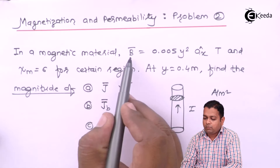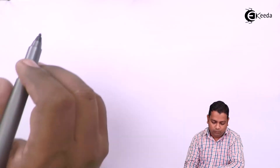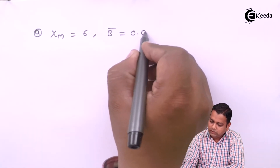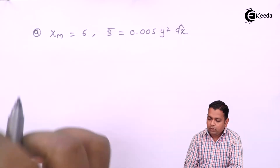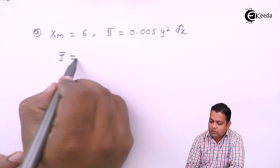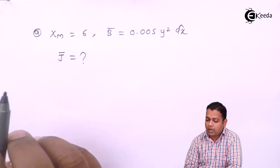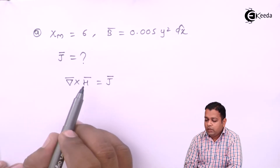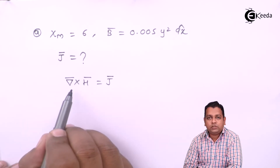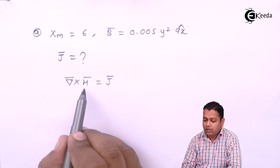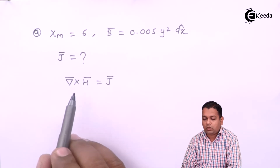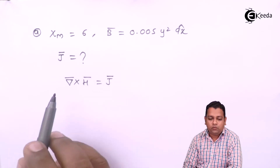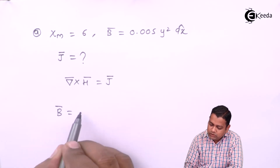Given data: magnetic flux density vector B̄ = 0.005y² Ax̂, and magnetic susceptibility χm = 6. For part A, we need the magnitude of J̄. From the point form of Ampere's circuital law, we know ∇ × H̄ = J̄. So if H̄ is known, J̄ can be determined. We can calculate H̄ from B̄, similar to the previous problem. The relation is B̄ = μH̄, so H̄ = B̄/μ.